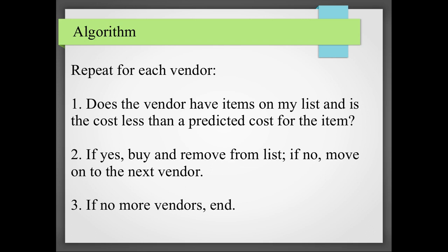First you have to check whether that vendor is having the item which is on your list. If he is having it, then you are going to buy it if it is coming under your predicted cost of that item. If it is no, then you are going to move to the next vendor. If yes, you are going to buy the product and remove that item from the list. If no, then you are going to move to the next vendor. You have to repeat the same process for each and every vendor.